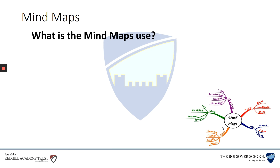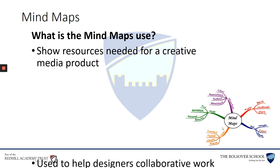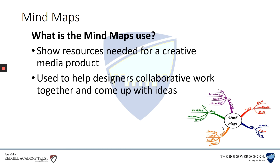What is the mind map — in other words, why would we do it? It shows resources needed for a creative media product. As you can see in the bottom right corner, it talks about the style, the structure, paper that you might use, the use of lines — but there are many different ways you can actually develop a mind map. It's used to help design collaboratively: people work together and come up with different ideas, then they come together and create a mind map of everybody's ideas.